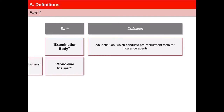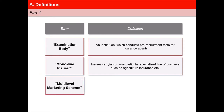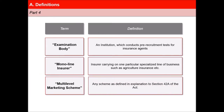'Mono Line Insurer', for the purpose of these regulations, means an insurer carrying on one particular specialized line of business, such as agriculture insurance or export credit guarantee business. And last, 'Multi-Level Marketing Scheme' means any scheme as defined in explanation to Section 42A of the Act.